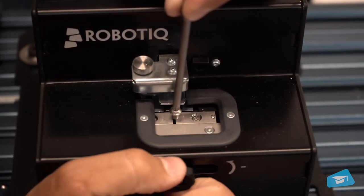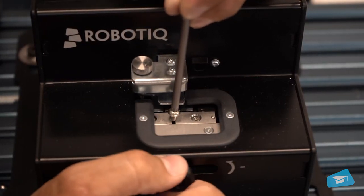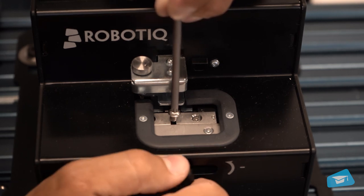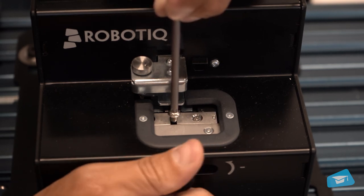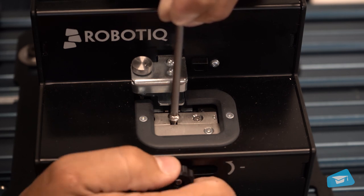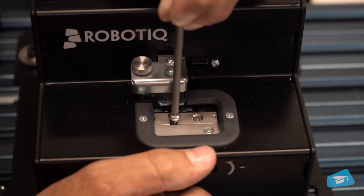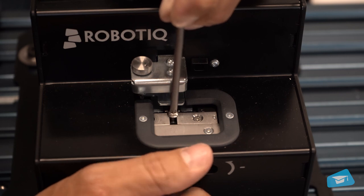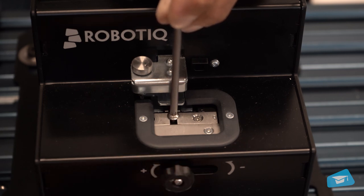The first thing you need to adjust is the screw singulator. This is the part of the feeder that singulates the screw and brings it to the position where it will be picked up by the screwdriver. Turn the knob until the opening between the screw singulator plates is slightly larger than the threaded portion of the screw.